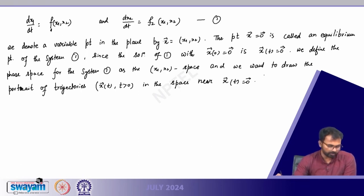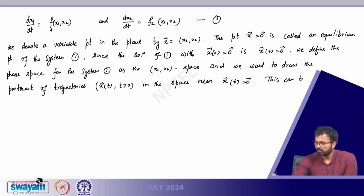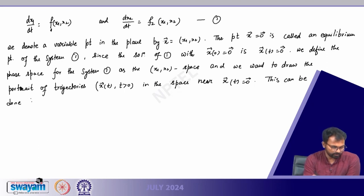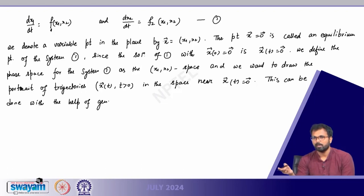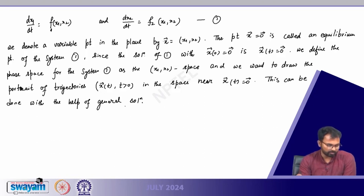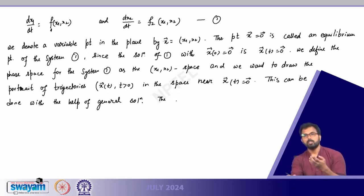This can be done with the help of the general solution — where we write x(t) as c1 times eigenvector times e to the power lambda1, plus c2 times eigenvector times e to the power lambda2. The portrait will depend on the eigenvalues lambda1 and lambda2.